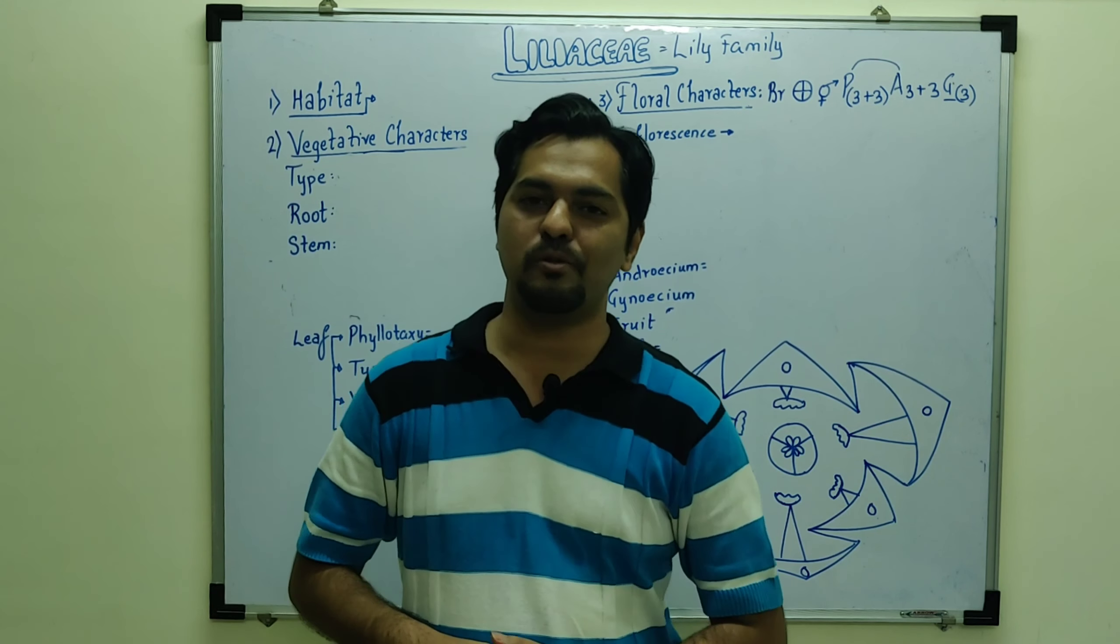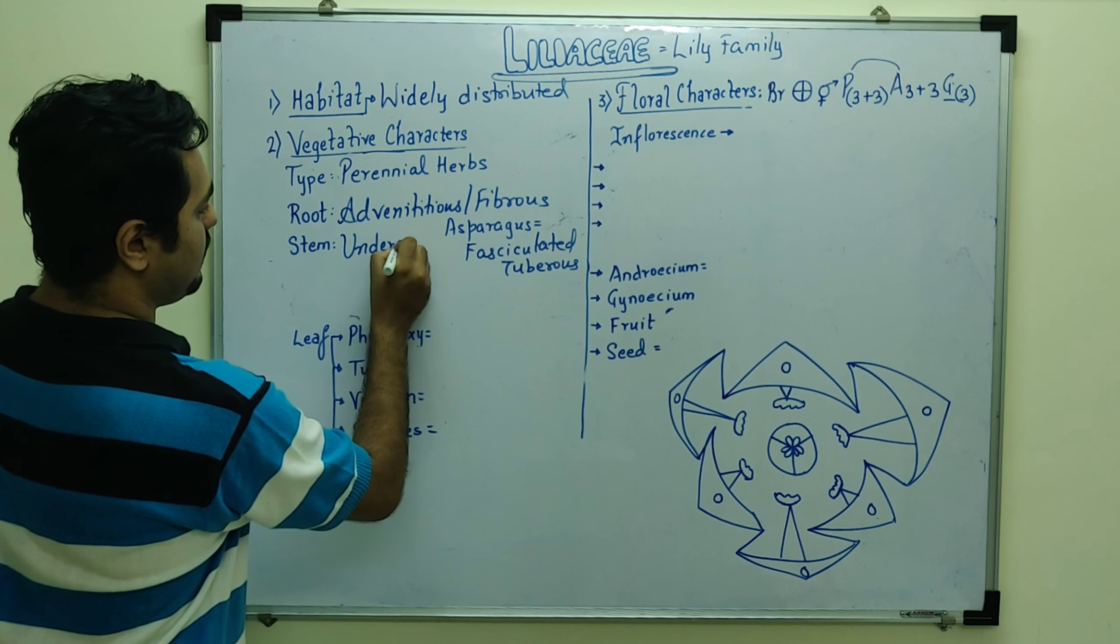Also, which is a type of root, asparagus, which we can see as the presence of fasciculated tuberous root. Fasciculated tuberous root, which is a type of adventitious root only. In clusters, roots, asparagus we can see.